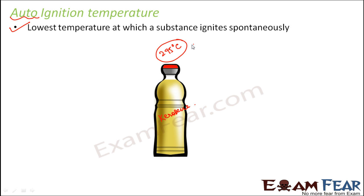This means that kerosene has a flashpoint in the range of 38 to 72 degrees Celsius — within that temperature range it can get ignited if there is an ignition source present, only with an external ignition source. But if there is no external ignition source, kerosene by itself will not catch fire.